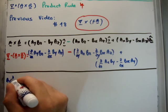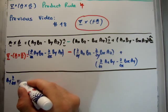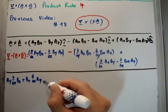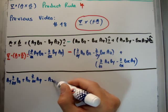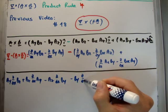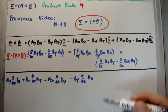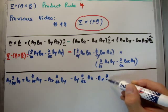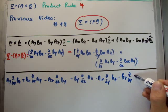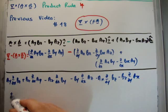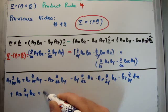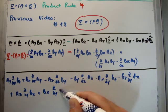So we're going to have a sub y del del x b sub z, plus b sub z del del x a sub y, minus a sub z del del x b sub y, minus b sub y del del x a sub z. We're going to have minus a sub x del del y b sub z, and minus b sub z del del y a sub x. Plus a sub z del del y b sub x, plus b sub x del del y a sub z.